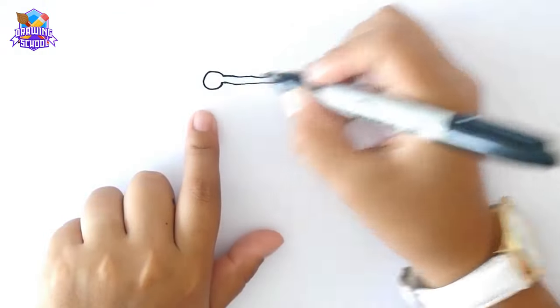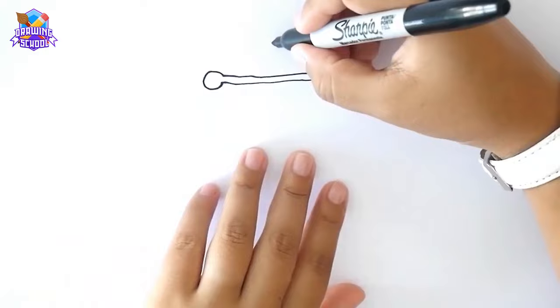Now that we have it, we draw another one just like the first one, crossing it.